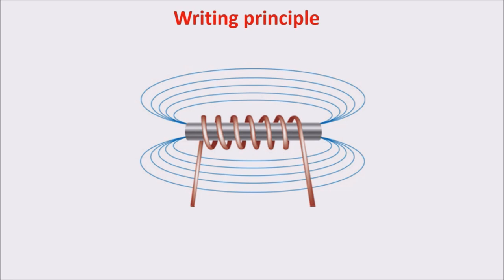So the writing principle consists in the passing of an electric current to write a 1 and the passing of an opposite current to write a 0. In this way, the magnetic material nearby orientates itself accordingly.